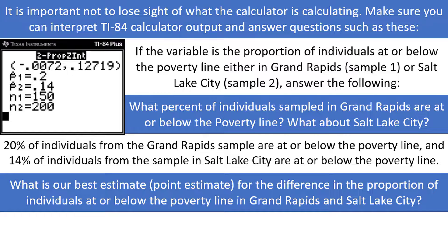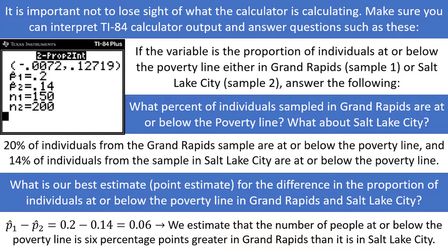Finally, what is our best estimate for the difference in the proportion of individuals at or below the poverty line in Grand Rapids and Salt Lake City? The point estimate for this confidence interval is the difference in sample proportions, 0.2 minus 0.14, which is equal to 0.06. We estimate that the number of people at or below the poverty line is 6 percentage points greater in Grand Rapids than it is in Salt Lake City.